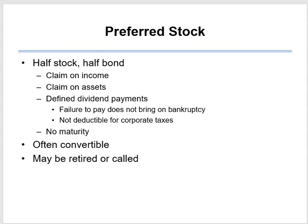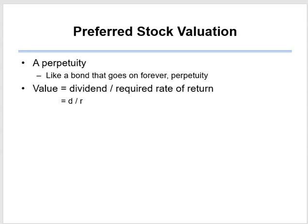Preferred stock may also be retired or called, meaning the company can buy back the preferred stock. Why would they do that? Suppose they issued preferred stock at a 5% dividend payout, but now they can borrow money at 3% — why pay 5% when you can pay 3%? So they'd pay back the preferred stockholders and sell bonds or new preferred stock at the lower rate. Preferred stock is a perpetuity — an annuity that goes on forever. The value of preferred stock is simply the dividend divided by your required rate of return.